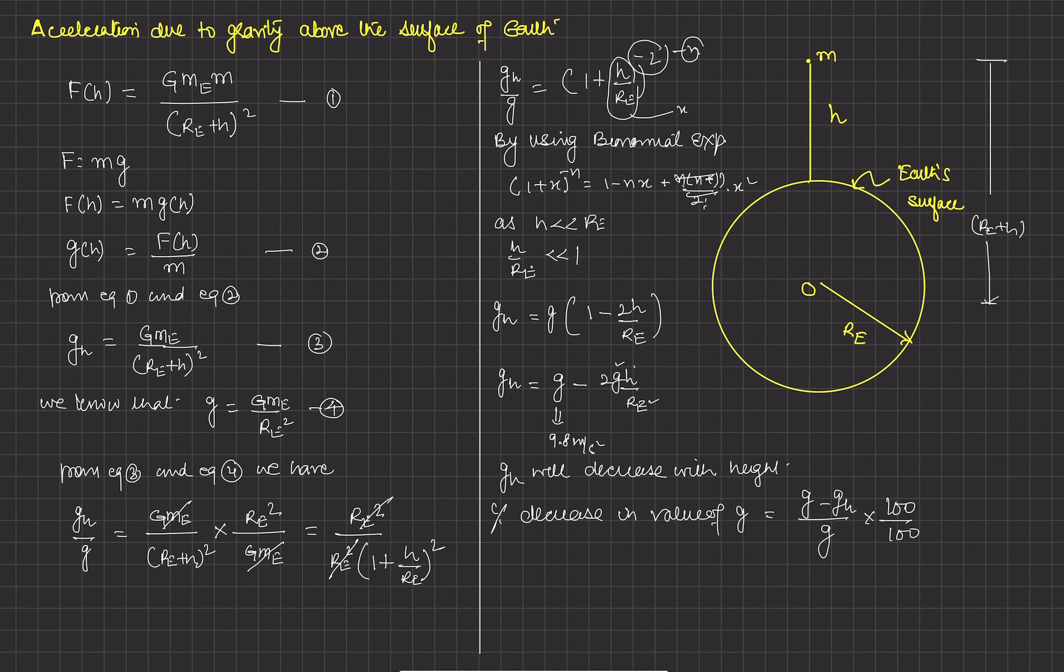So we get (g minus g_h) upon g cross 100 percent. If we solve this from equation number 5, we are left with 2h upon r_e cross 100 percent. So this is the percentage decrease in the value of g. So this is all about this video, thank you very much.